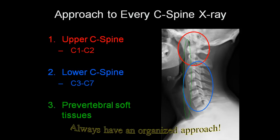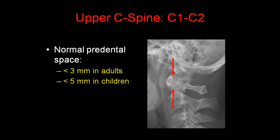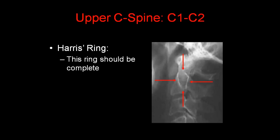Remember to always have an organized approach to every cervical spine x-ray. In terms of the upper cervical spine, it's very important to look at the C1-C2 relationship. The normal pre-dental space is between the anterior arch of C1 and the anterior aspect of the dens, shown as the yellow bar. This space is less than 3 mm in adults and less than 5 mm in children. Always look at Harris' ring — a ring superimposed over C2 that should be complete. If it's incomplete, suspect a fracture.